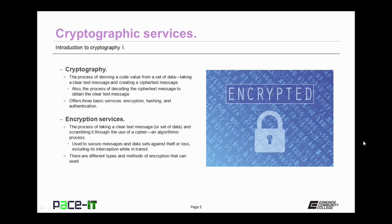Cryptography offers three basic services: encryption, hashing, and authentication. It's time to begin a discussion on encryption services. This is the process of taking a clear text message or set of data and scrambling it through the use of a cipher, that's an algorithmic process. Encryption services are used to secure messages and data sets against theft or loss, including its interception while the data is in transit. There are different types and methods of encryption that can be used.